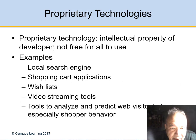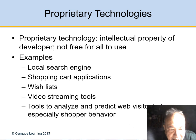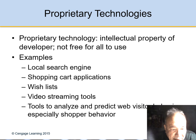Some proprietary technology is the intellectual property of the developer and is not free for all users. Examples include local search engines, shopping cart applications, wishlists, and other tools used to buy things from the internet.